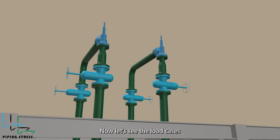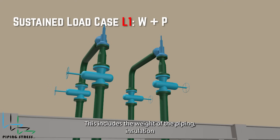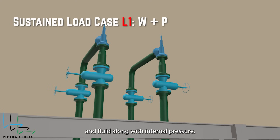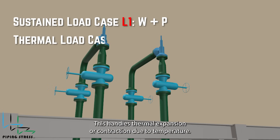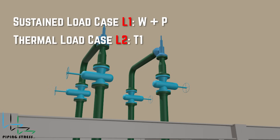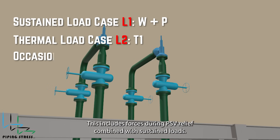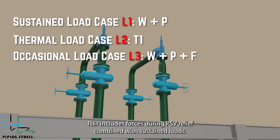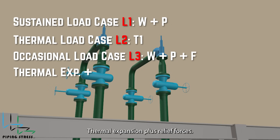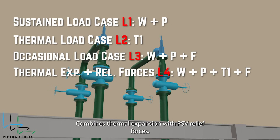Now let's see the load cases for PSVs. Sustained load case: this includes the weight of the piping, insulation, and fluid, along with internal pressure. Thermal load case: this handles thermal expansion or contraction due to temperature. Occasional load case: this includes forces during PSV relief combined with sustained loads. Thermal expansion plus relief forces: combines thermal expansion with PSV relief forces.